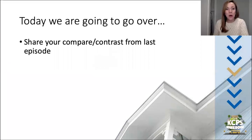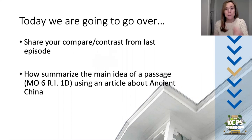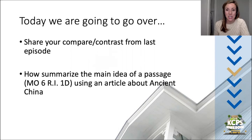Today we're going to go over a little bit about what we talked about last week concerning ancient China. You took some notes over the week comparing what you know about American history to the Chinese history we learned last week. And then we're going to build on this idea by applying an English standard that's common from 5th and 6th grade into high school: how to summarize the main idea of a passage. We're going to do this by looking at an article about ancient China.